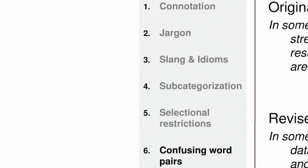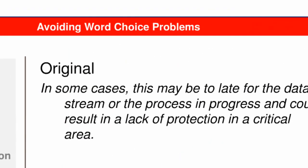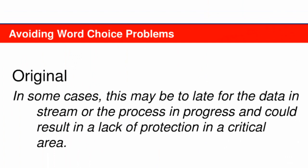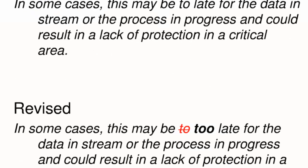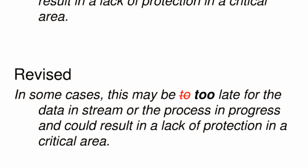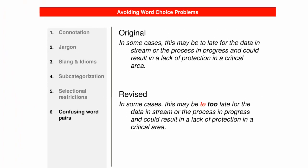The sixth and final source of word choice problems is confusing word pairs. The original sentence includes a word that's been confused with its pair. In the revised version, the correct word — spelled T-O-O — has replaced its homonym T-O.